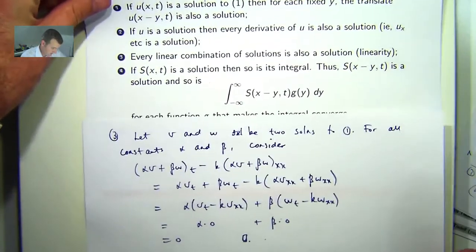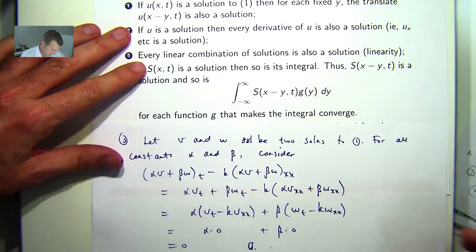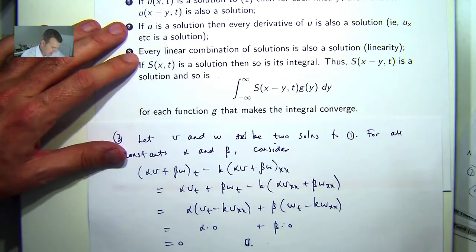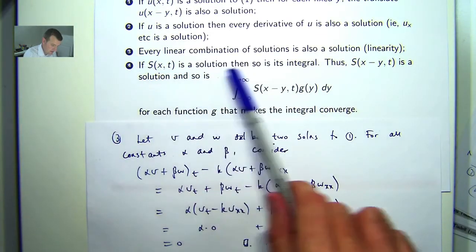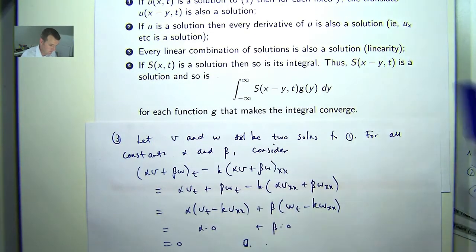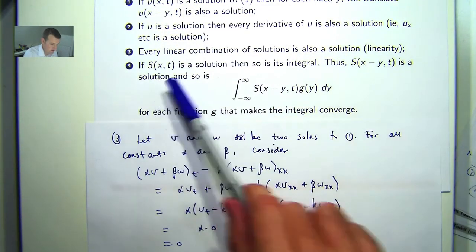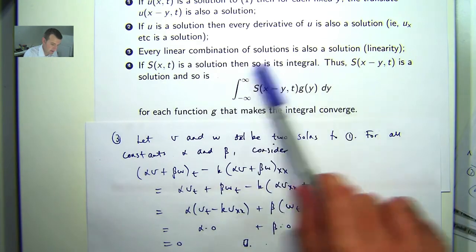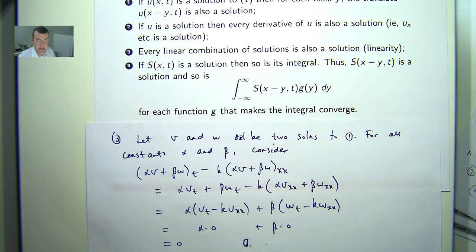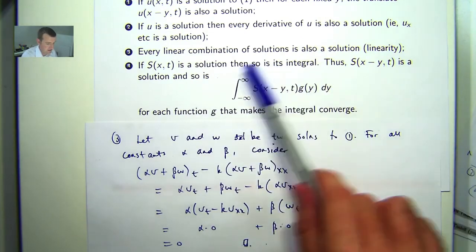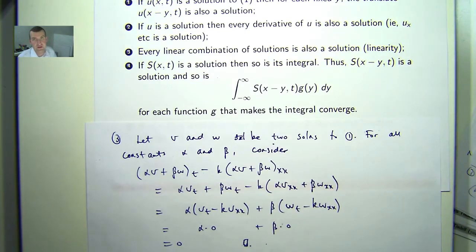What about the next one? We're making our way through. So if s(x) is a solution to 1, then so is its integral. Thus from property 1 this translate is a solution and so is this expression. This expression is going to come in very handy. Now what is g here? G is any suitable function that makes the integral converge. This is an improper integral. So how do we prove this?